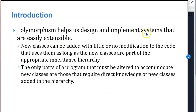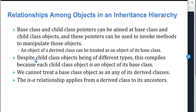Polymorphism helps design and implement systems that are easily extensible. New classes can be added with little or no modification to the code that uses them, as long as the new classes are part of the appropriate inheritance hierarchy. The only parts of a program that must be altered to accommodate new classes are those that require direct knowledge of new classes added to the hierarchy — in other words, you only have to change the code that knows which classes it actually uses.